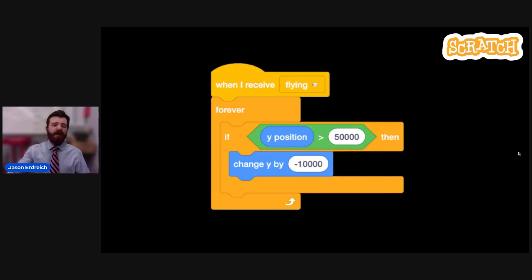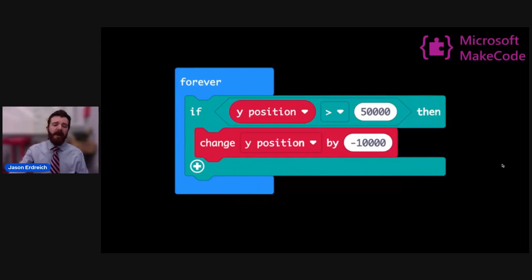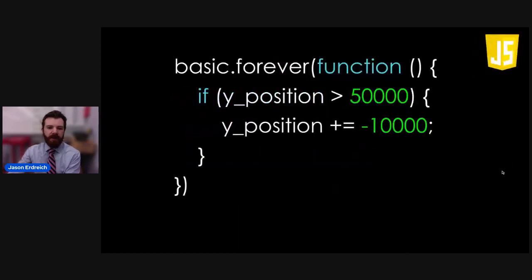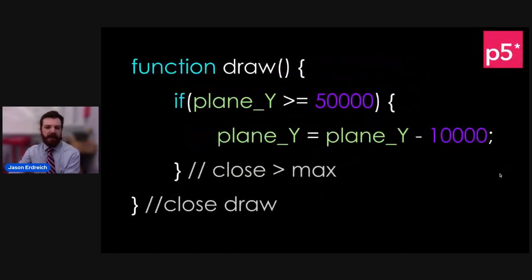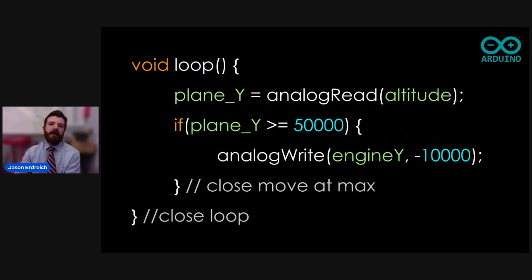If I were to rewrite this exact same statement to program an airplane in Scratch, it would look like this. The same thing written in MakeCode by Microsoft looks a little different — slightly different blocks, same general outcome. In Python it would look like this, in JavaScript like this, in P5JS like that, and if we want to build an actual robotic plane using Arduino, it would look like this. This same type of skill from the very first day is utilized in pretty much any language as students gain understanding as a programmer.